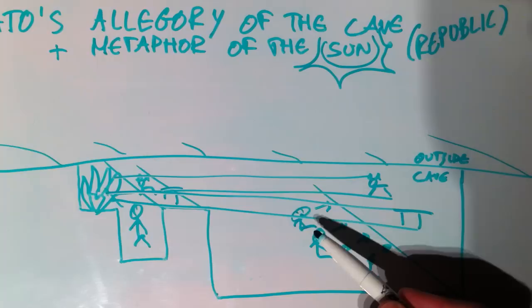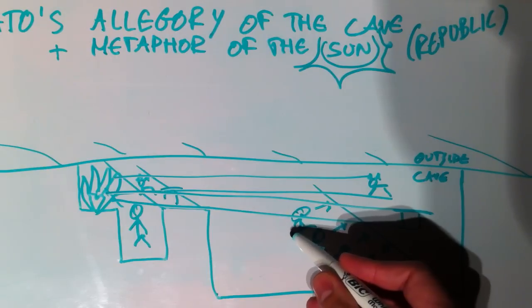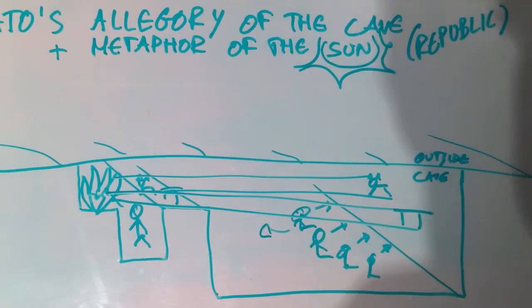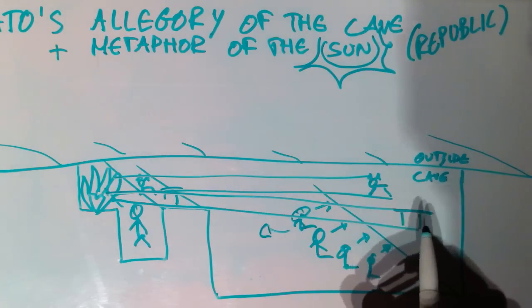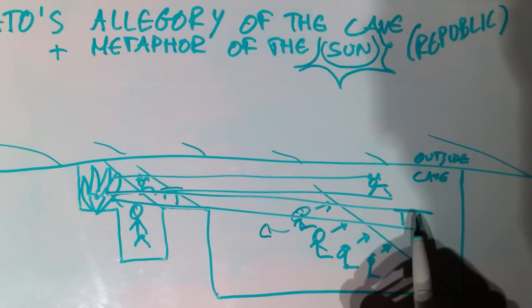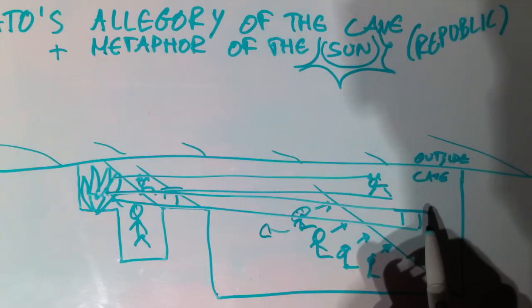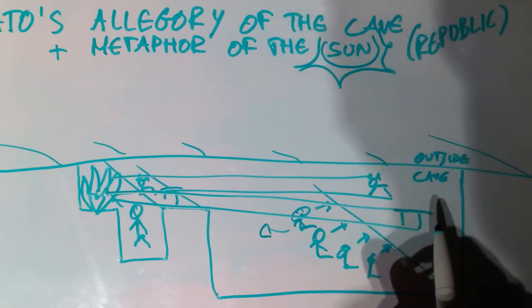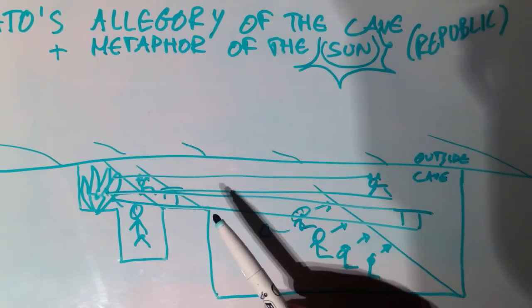Suppose that one of the guys, one of the prisoners is released, and he can move his head, and he can actually watch the other way around. He can see the fire and the things, and then he should recognize that what he has been seeing for the whole of his life is not real—they're not real tables and real cats. They're just images, shadows, reflections, copies of the real things.